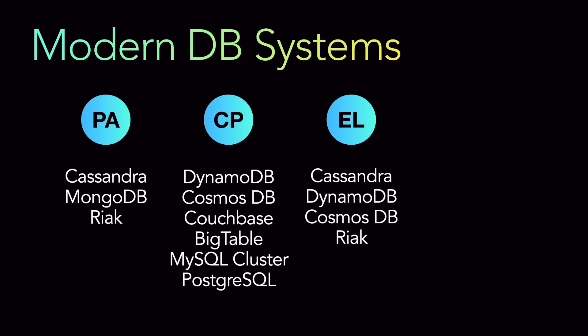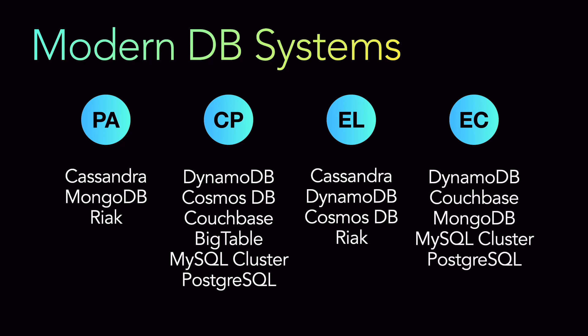Then we have the EL case — lower latency — where we have Cassandra, DynamoDB, CosmosDB, and Redis. And the consistency case where we have DynamoDB, Couchbase, MongoDB, MySQL clusters, and PostgreSQL. You'll notice that systems like DynamoDB and Cassandra appear in multiple categories. The reason is that these systems have user-adjustable settings for their consistency and latency values. CosmosDB, for example, has five selectable consistency levels to choose from. Basically it's a matter of trade-offs: when designing your system, you have to think about what you want to achieve — high consistency, high availability, partition tolerance — and whether your system is latency-sensitive. Based on those properties and trade-offs, your system will be built.